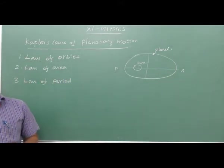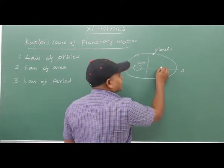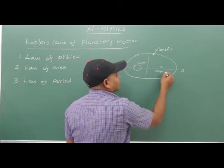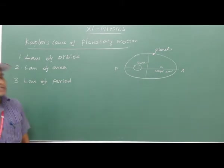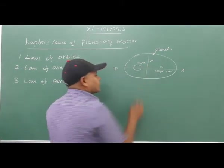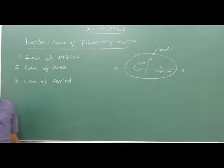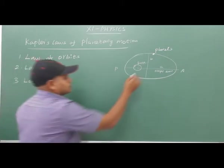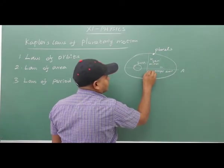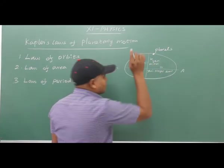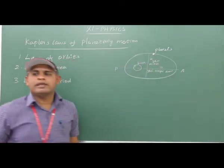Next, the semi-major axis is A. This one is the semi-major axis. This one is the major axis. This one is the semi-minor axis, which is B.